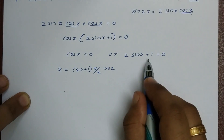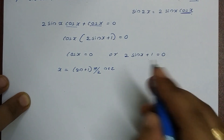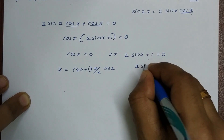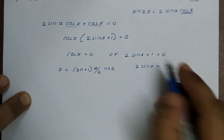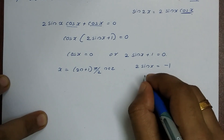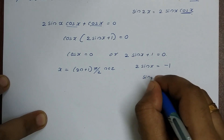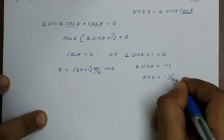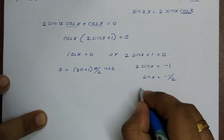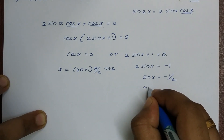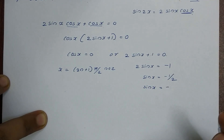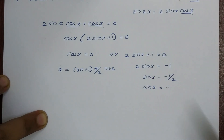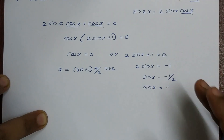Now for the second factor: 2sinx plus 1 equals 0, so 2sinx equals minus 1, which gives sinx equals minus 1/2. We know that sin of π/6 equals 1/2, so sinx equals minus 1/2 means minus sin(π/6).